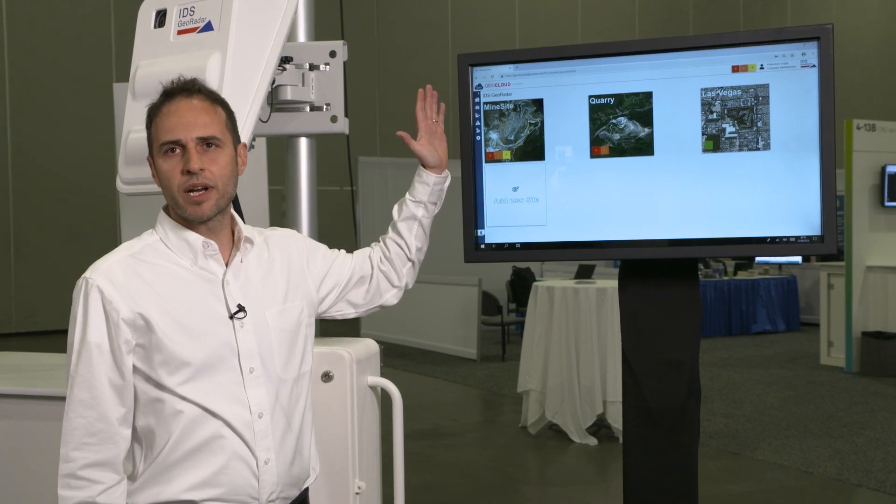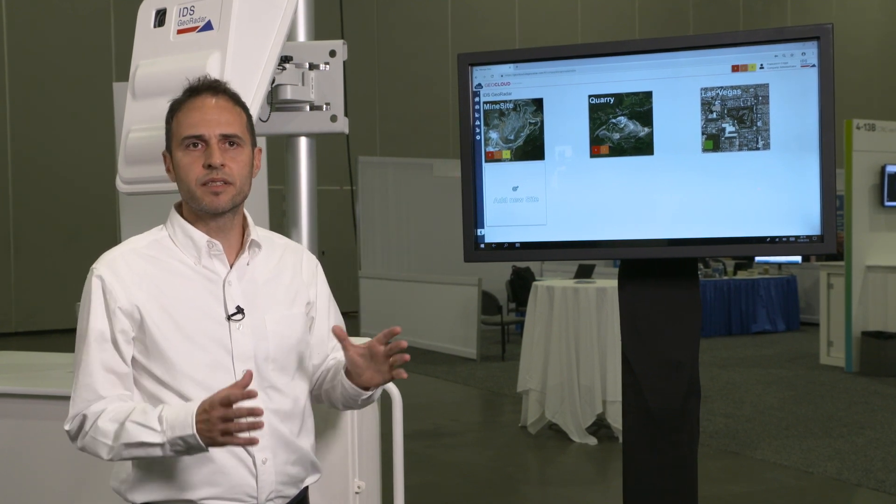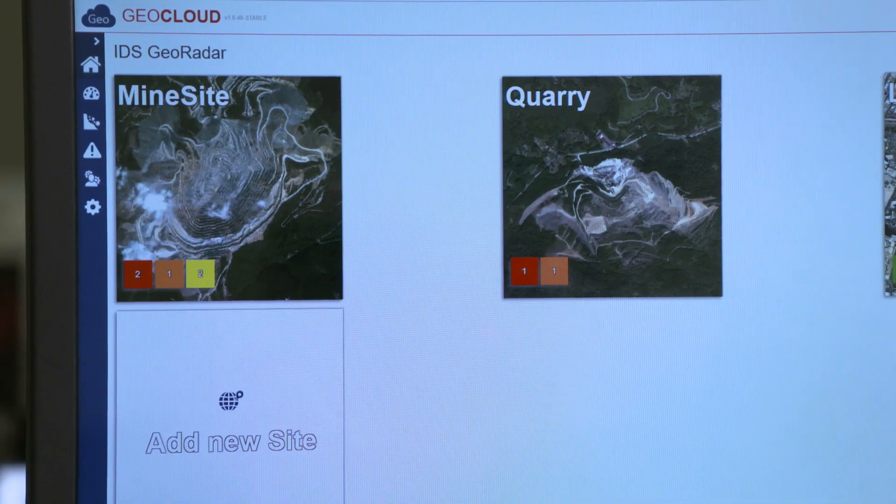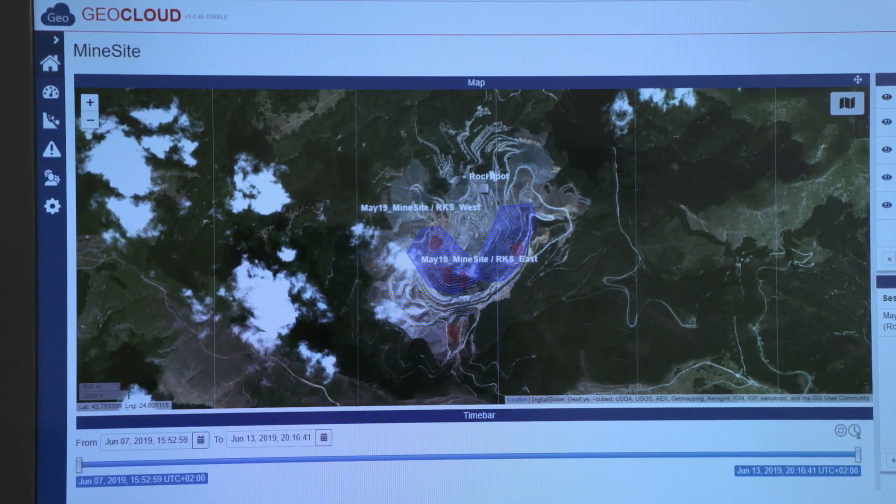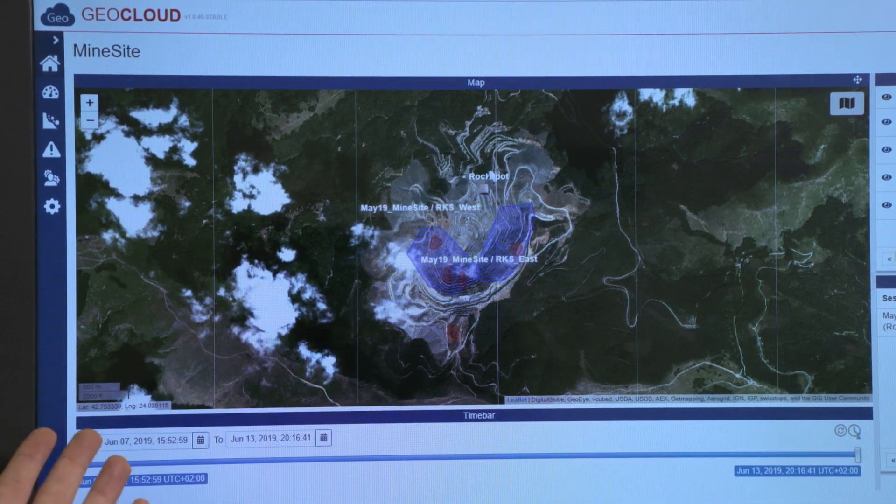The data is organized by site, where the site is a geographic area, and you can click on the area and see this easy-to-interact geographic view showing the coverage of Rockspot.